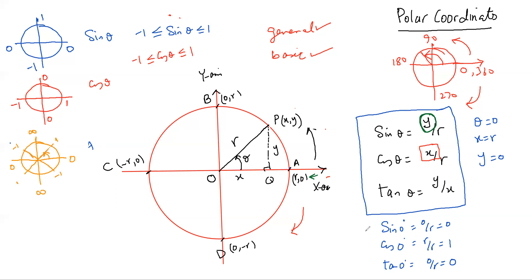Now finally, why are all of sine, cosine, and tangent positive in the first quadrant, only sine positive in the second, only tangent positive in the third, and only cosine positive in the fourth? Since sine depends on y, it will be positive in the two quadrants where y is positive — from 0 to 180 — and negative from 180 to 360.